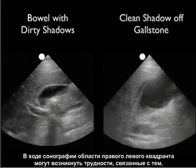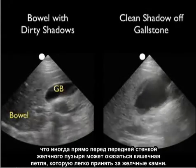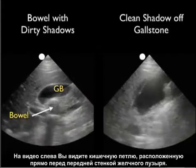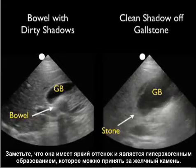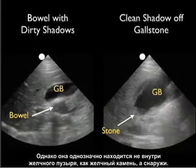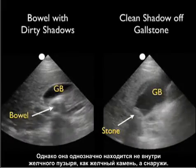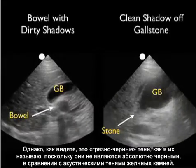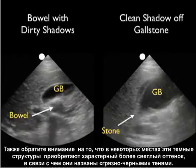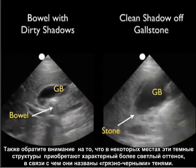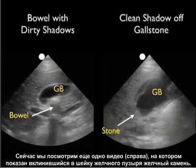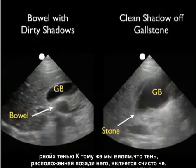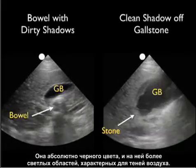One potential pitfall in right upper quadrant sonography is that a loop of bowel may come right up against the wall of the gallbladder and be mistaken for a gallstone. In the video clip to the left, we see a loop of bowel against the posterior wall of the gallbladder — it has a bright hyperechoic appearance that could be mistaken for a gallstone. However, the loop of bowel is clearly outside the gallbladder wall. Also, the shadows off the air-filled bowel are dirty shadows, not completely dark, with areas of white within them. In the video clip to the right, an impacted gallstone at the neck has a hyperechoic appearance, is clearly within the lumen, and the shadow off the back is a clean shadow — completely dark, without those light areas that characterize air shadows.